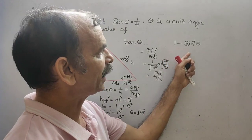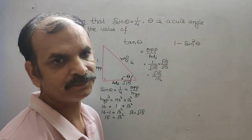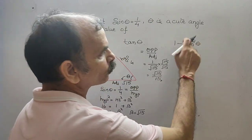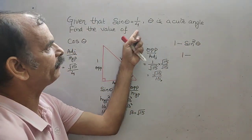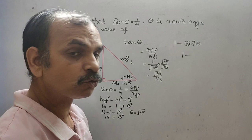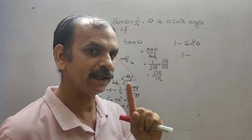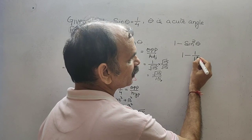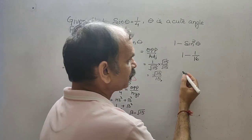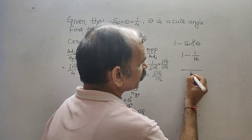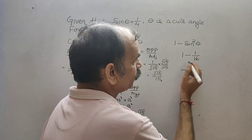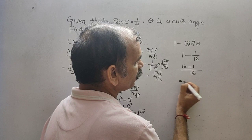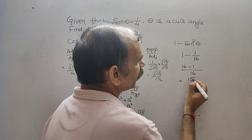Next comes 1 minus sin square theta. It will be 1 minus sin square theta, and sin is already given as 1 by 4. So, 1 minus 1 square by 4 square, that is 1 minus 1 by 16. Taking LCM as 16, it becomes 16 minus 1 by 16, therefore it is 15 by 16. So this is your answer.